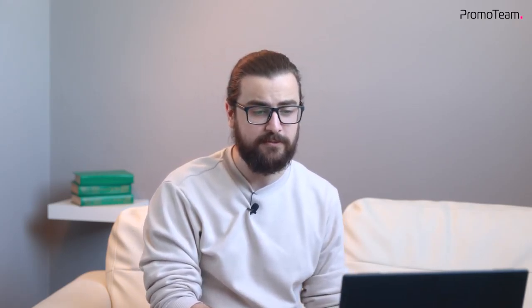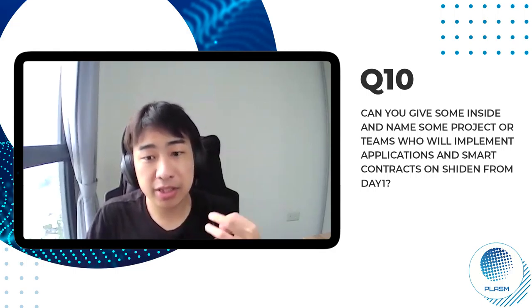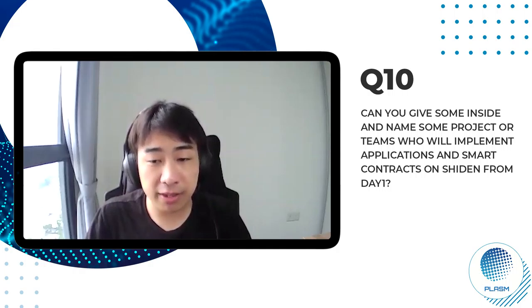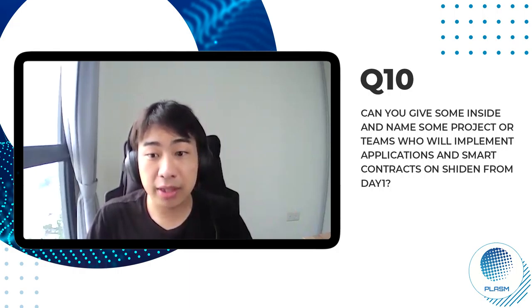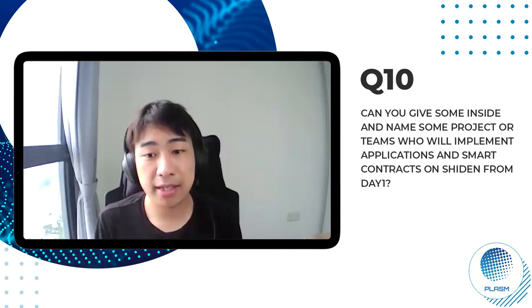Can you give some insight and name some projects or teams who will implement applications and smart contracts on Shiden from day one? We have a lot of projects already building on our testnet right now. After launching Shiden Network, I think a lot of projects will join our ecosystem because of dApps staking. The huge difference between Plasm Network and other parachains is dApps staking — only Plasm supports it because we invented it. Developers can get basic income by making smart contracts on top of Shiden Network from block rewards.